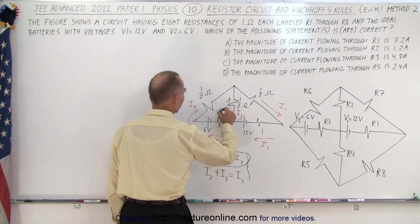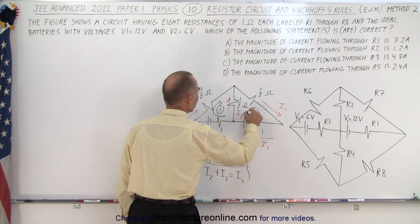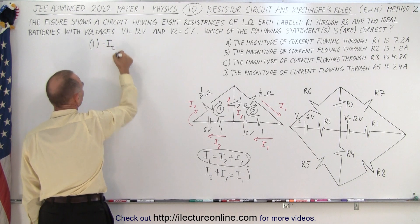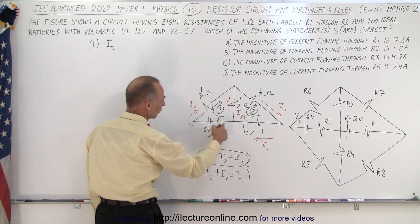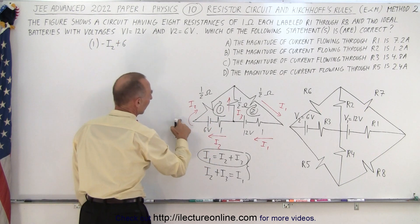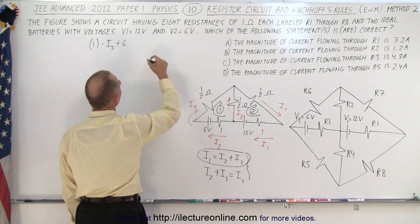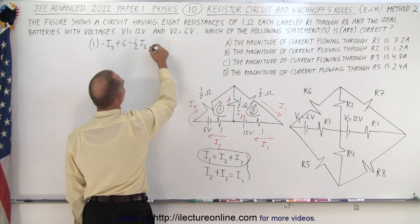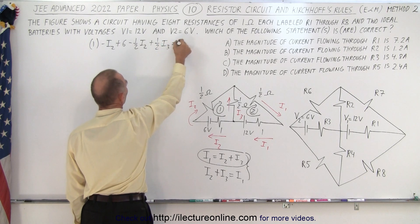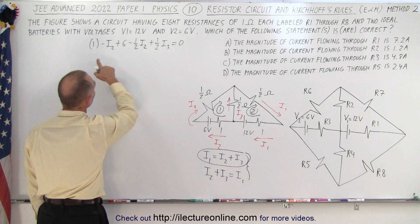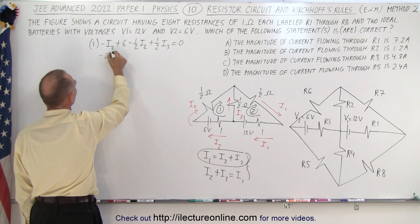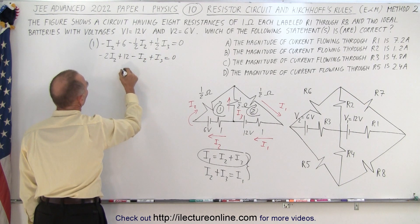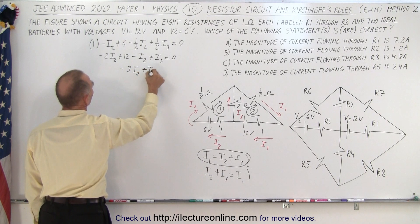For loop one, going clockwise we get a voltage drop of minus I2 times 1 ohm, plus 6 volts, minus one-half I2, and plus one-half I3, all equal to zero. Multiplying through by two to clear fractions gives minus 2I2 + 12 minus I2 + I3 = 0, which simplifies to minus 3I2 + I3 = minus 12.